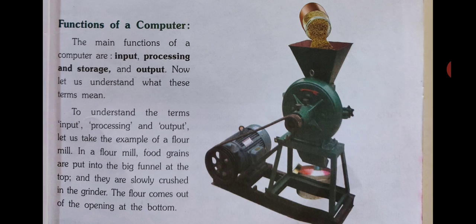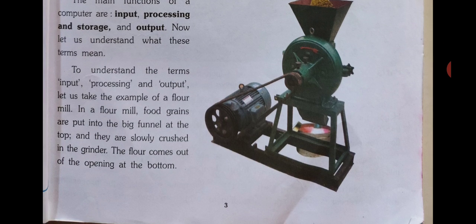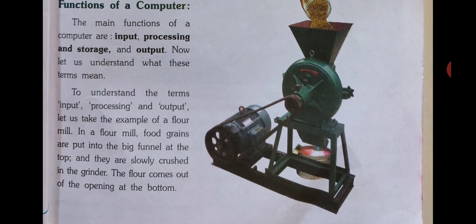The main functions of a computer are input, processing and storage, and output. Toh main function computer ki kya kya hai — input hai, processing and storage hai, aur output hai. Now let us understand what these terms mean. In teen functions ka matlab kya hai uske liye hum ek example lete hai — floor mill ka.